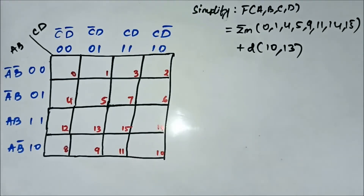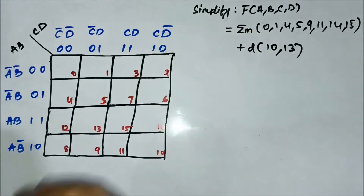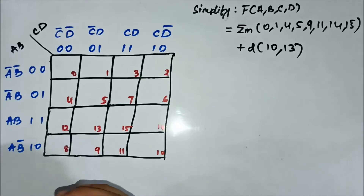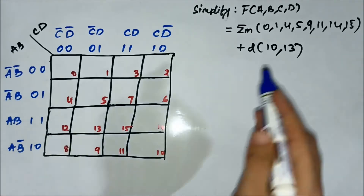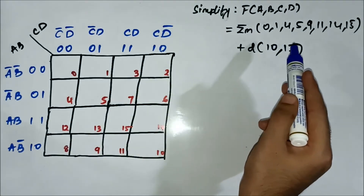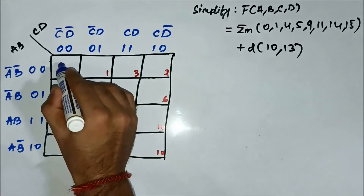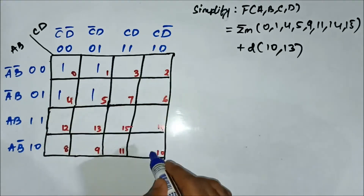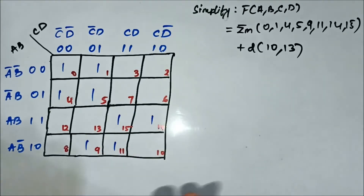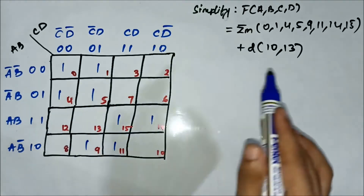Here we have another question on don't care condition SOP K-map simplification. We have the minterm values and the don't care values. As usual, we'll mark the minterm values as 1 and the don't care values as X, then form groups to cover all the minterm values. The minterm values are: 0, 1, 4, 5, 9, 11, 14, and 15.